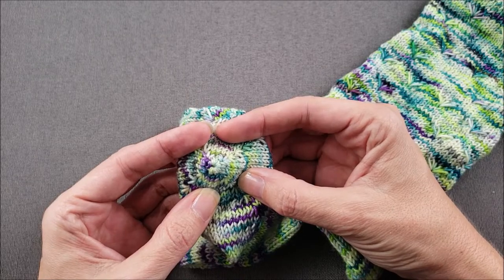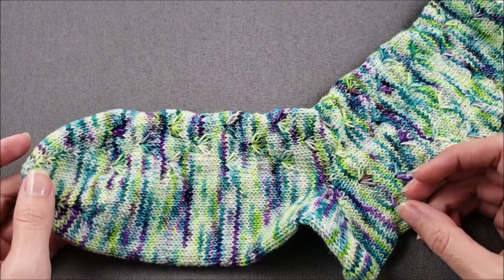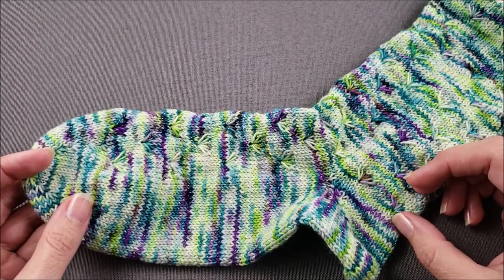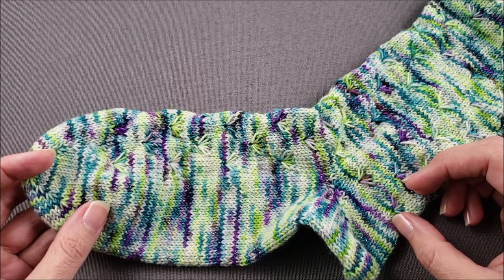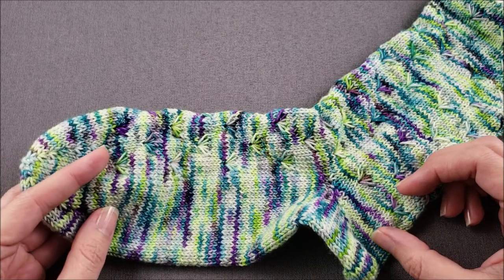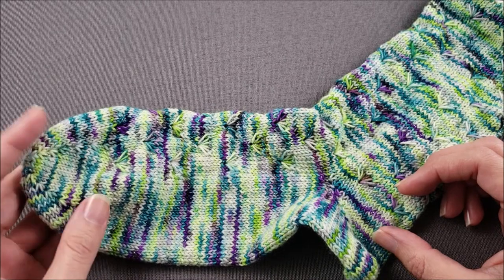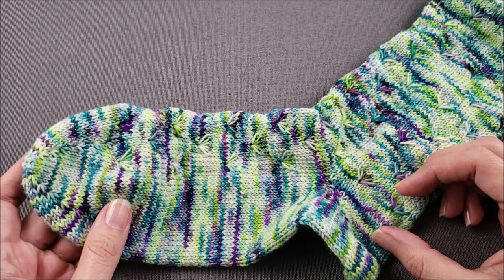This method is sometimes known as Emily Ocker's cast-on and it works really well for toe-up socks, top-down hats and mittens, and circular shawls or anything that has worked in the round starting with about four to eight stitches.